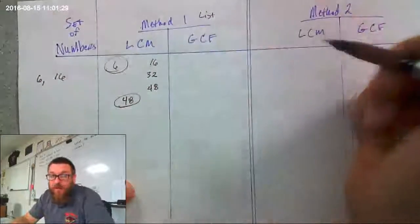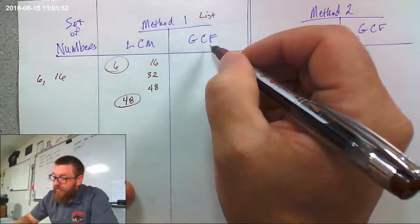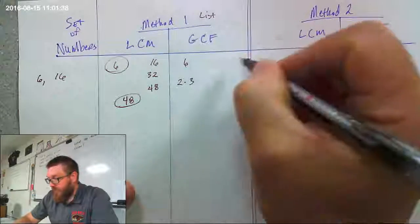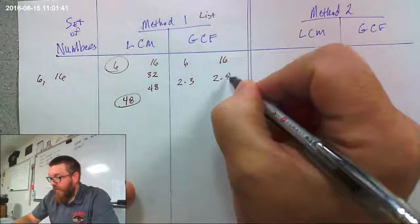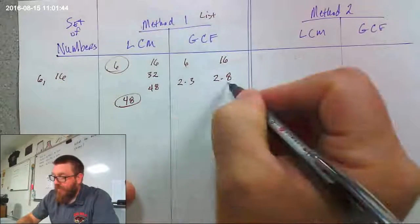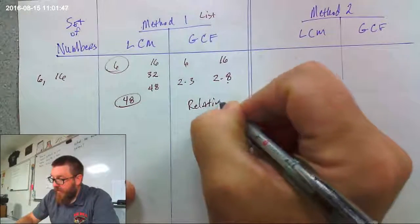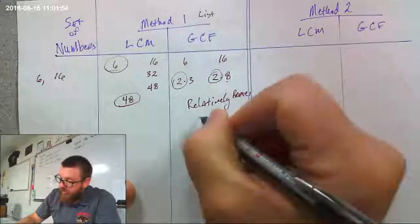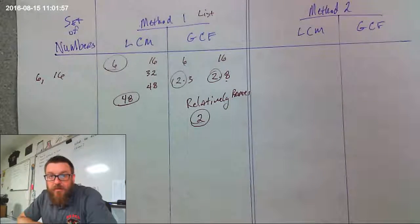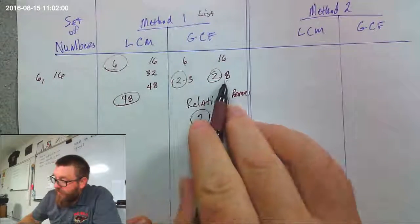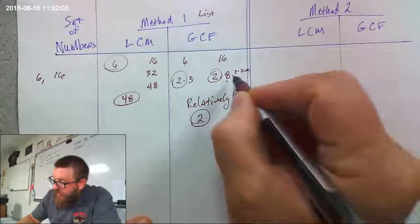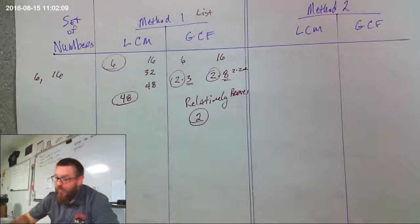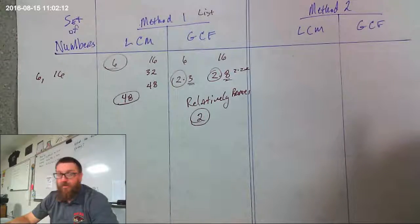Now, greatest common factor — looking for the biggest factor of both of those. 6 is 2 times 3. And 16 is 2 times 8. Now, 3 and 8 have nothing in common — they are what's called relatively prime; they have no common factors. So I can stop right there. My greatest common factor is 2. The reason I didn't make 16 into 2 times 2 times 2 times 2 is because 3 and 8 were relative primes. So my greatest common factor of 6 and 16 is 2.